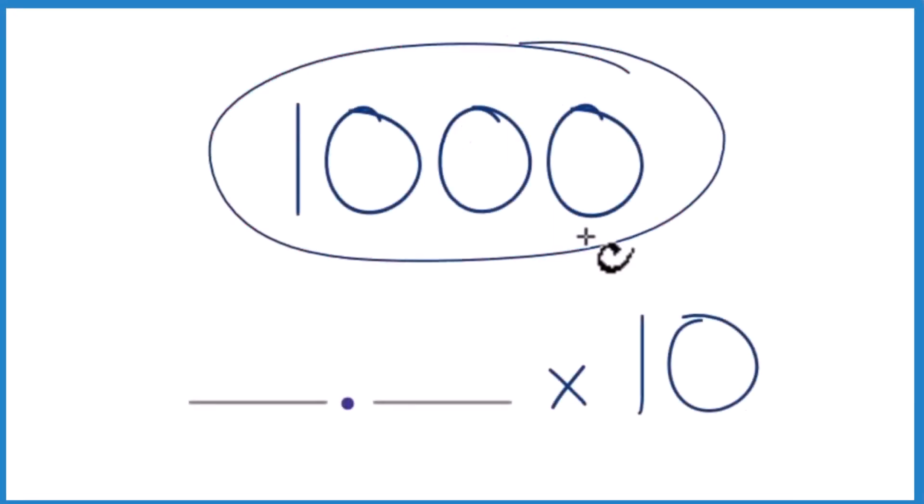Let's write 1000 in scientific notation. So we have this format here where we'll have a whole number and then a decimal times 10 to some power.